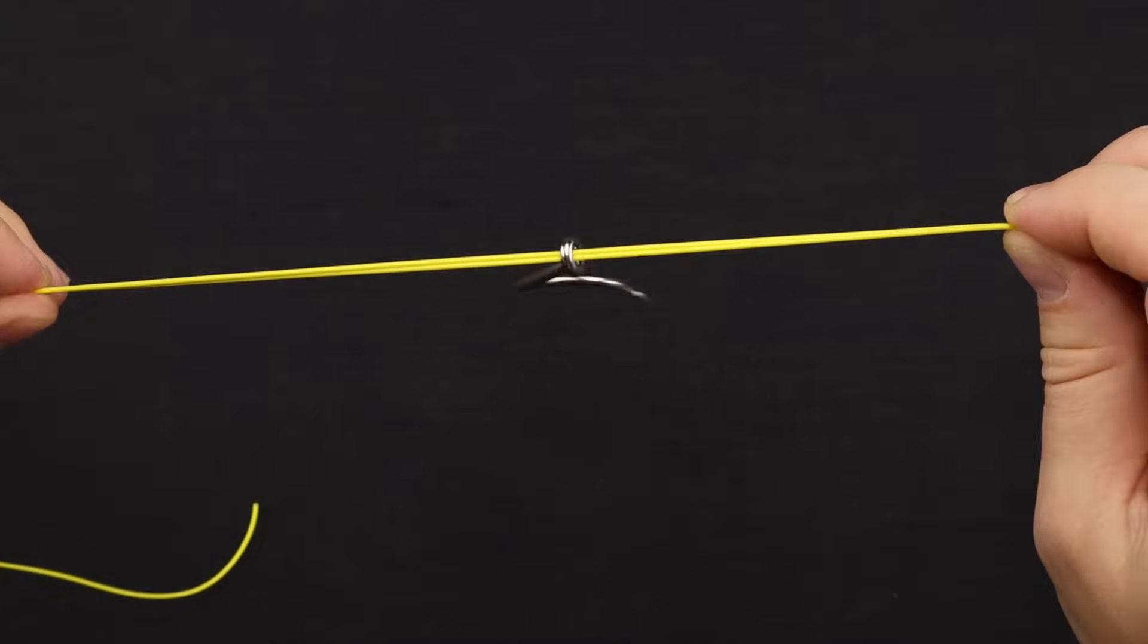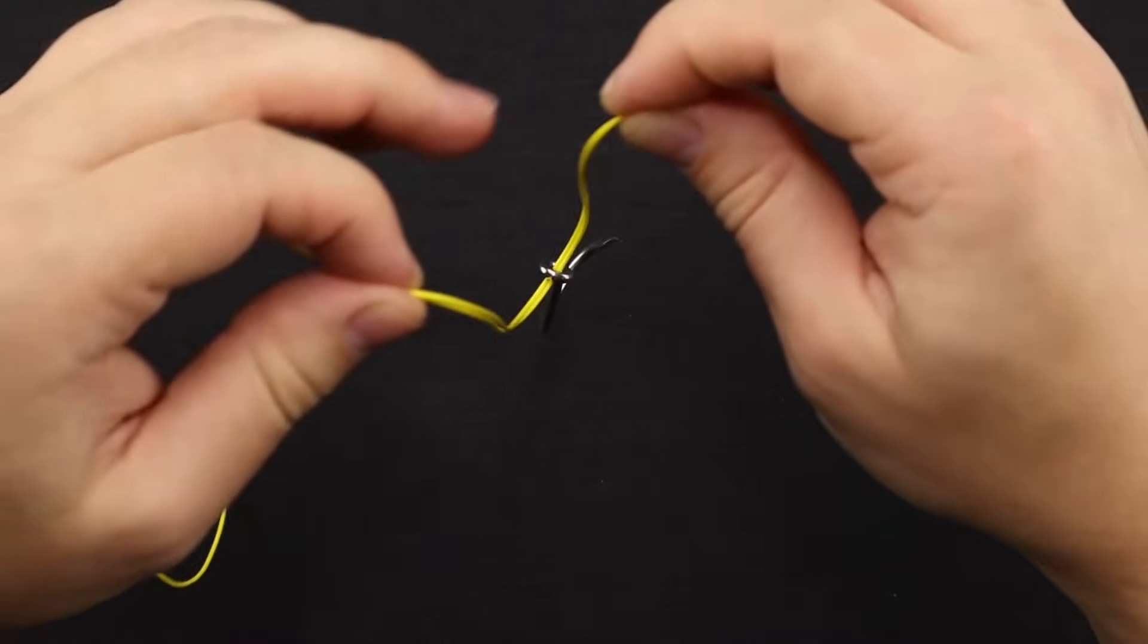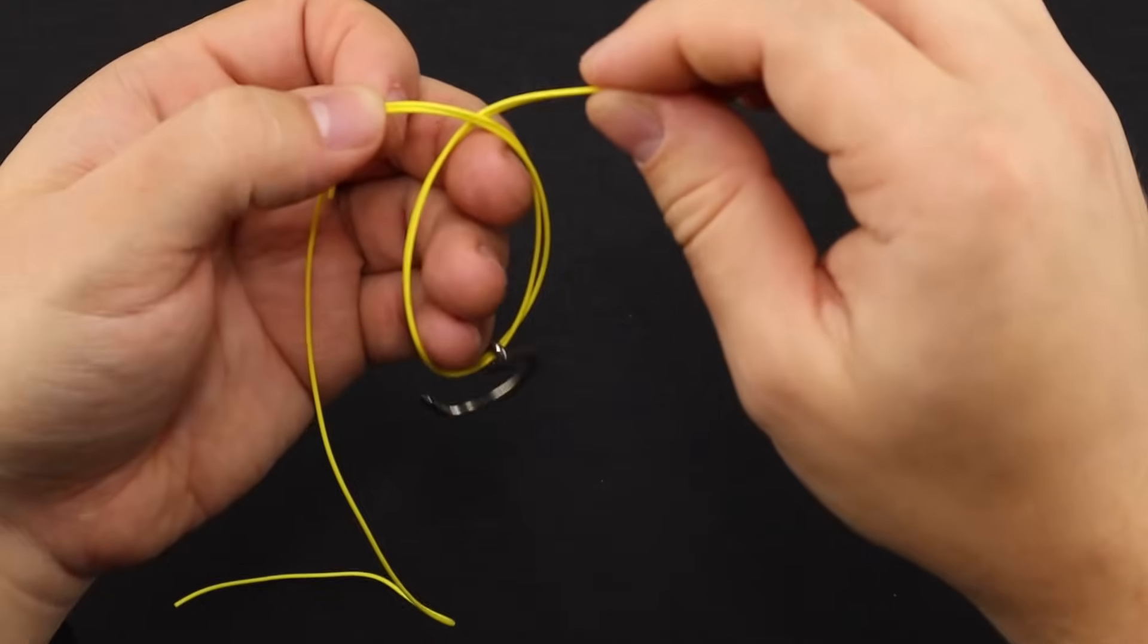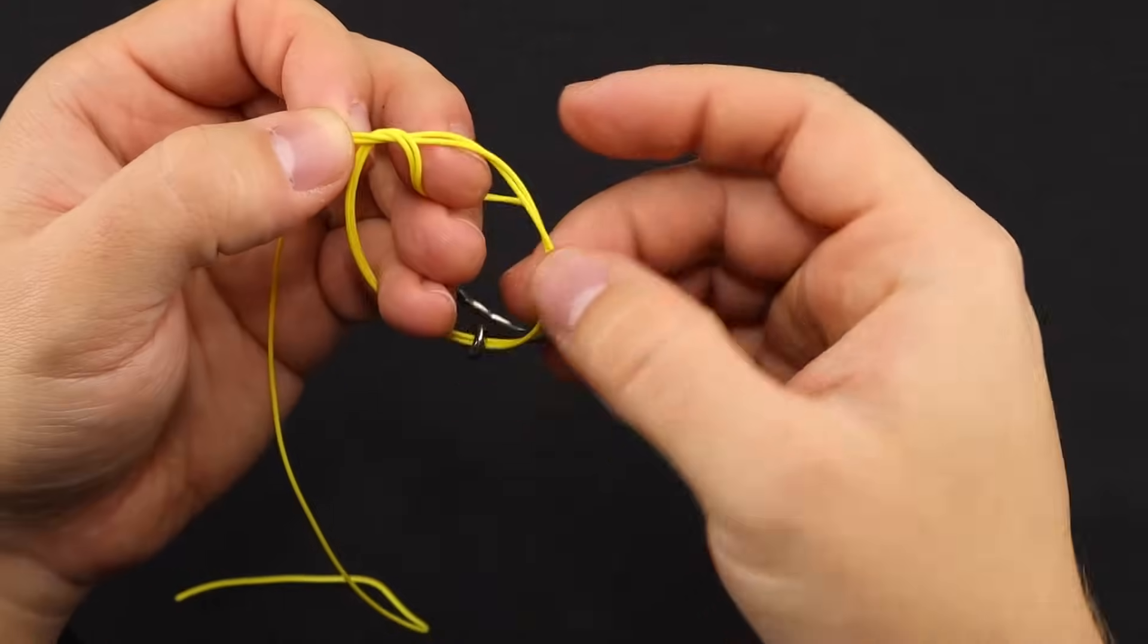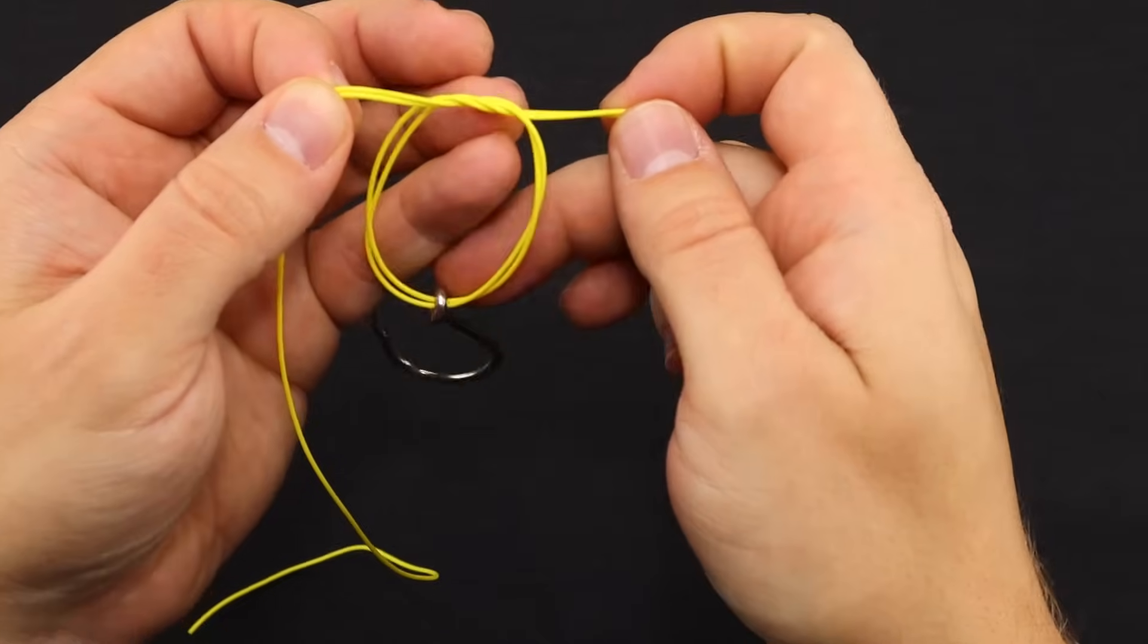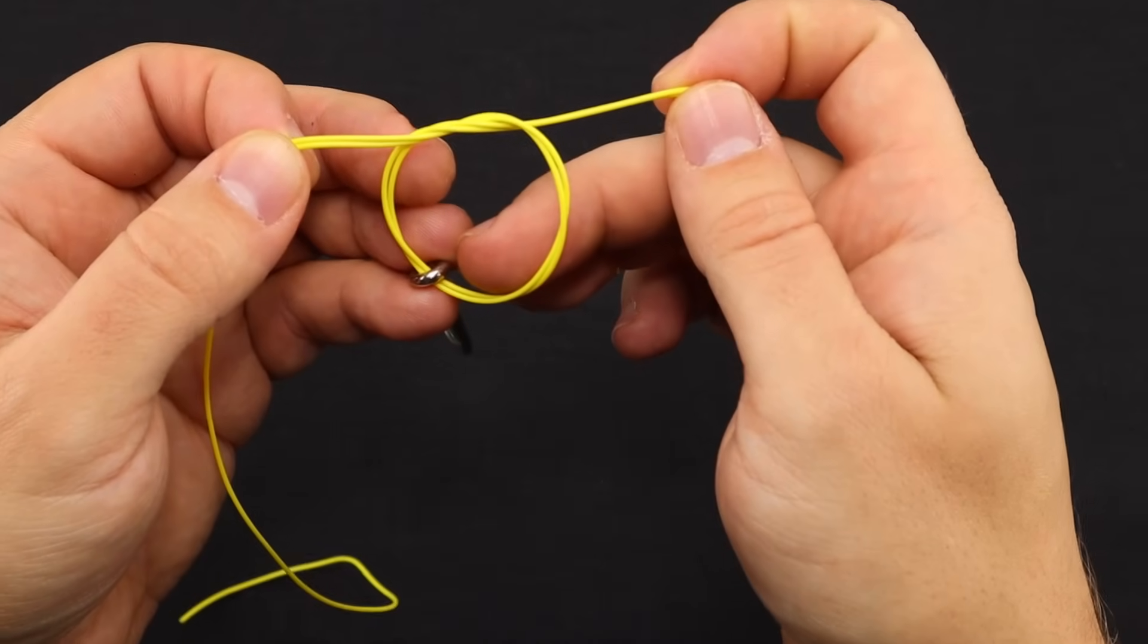Now with the two lines in your left and right, you're going to make an overhand knot just by looping it like so and running the loop through to make a standard overhand knot.